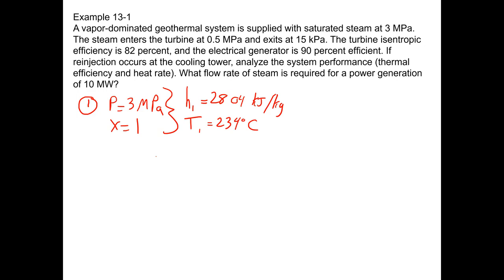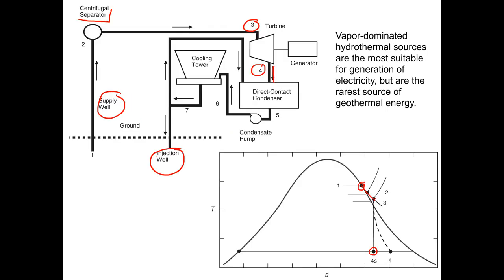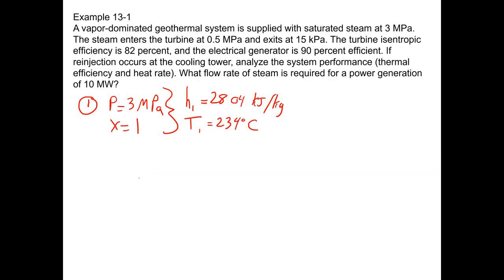As this process goes through the centrifugal separator, the process from state one to two and then to three is often referred to as an isenthalpic process, an isenthalpic expansion process, similar to an expansion valve for refrigeration systems. We're going to assume an isenthalpic expansion from states one to three.